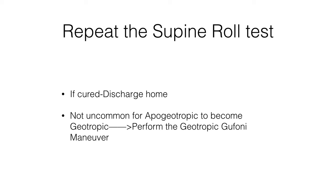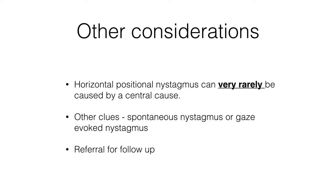10 minutes after the Gufani maneuver is performed, you can repeat the supine roll test. If the patient has no further vertigo or nystagmus, you can discharge them. Sometimes a patient with apogeotropic horizontal canal BPPV will develop geotropic horizontal canal BPPV after the Gufani maneuver — if so, simply perform the geotropic Gufani maneuver. The vast majority of patients with horizontal nystagmus during the supine roll test will simply have horizontal canal BPPV, though rare cases with horizontal positional nystagmus can have a central cause, and these patients should be referred for follow-up.